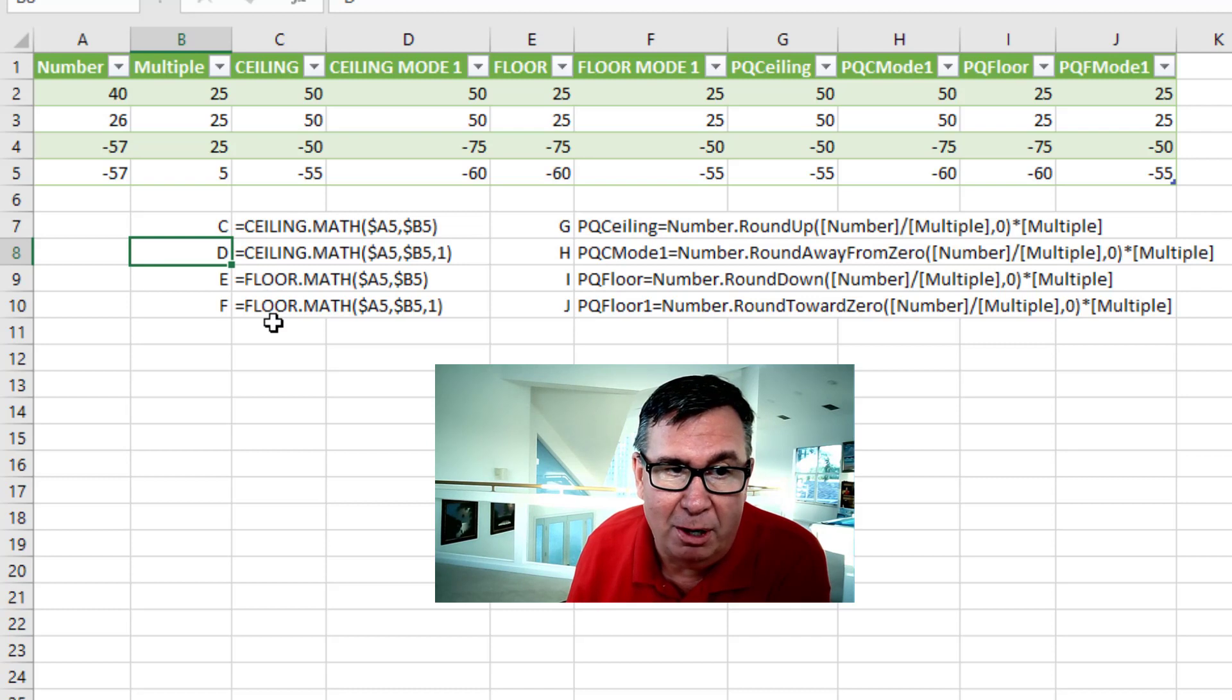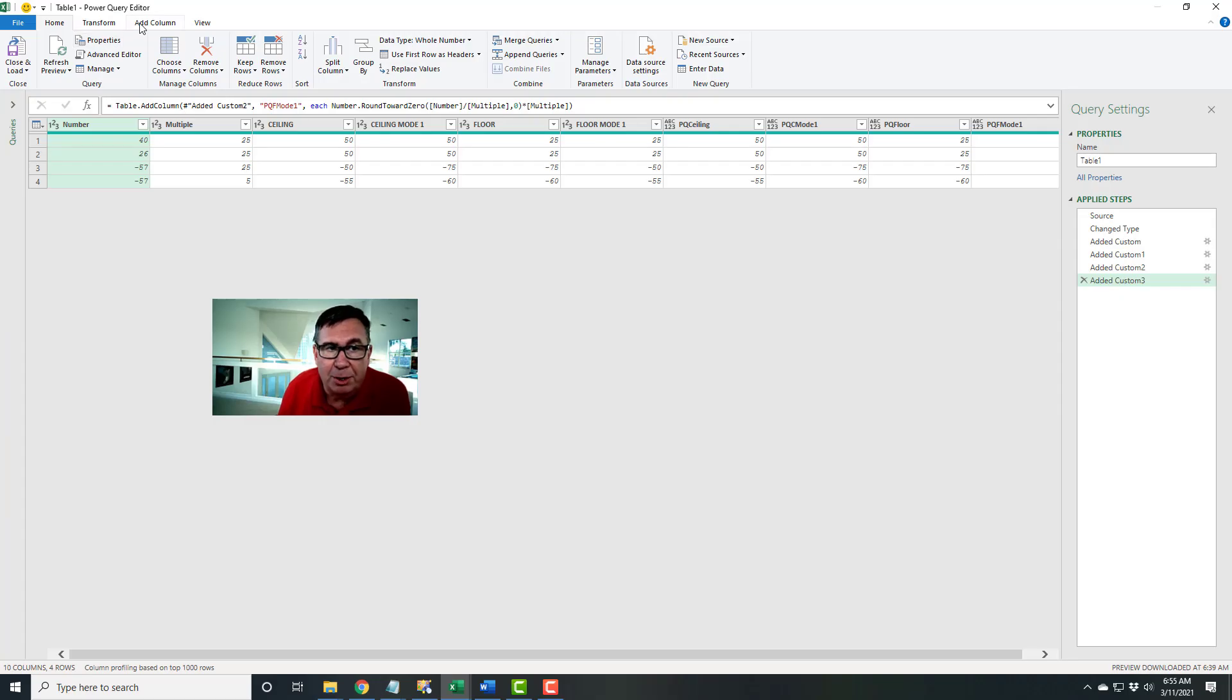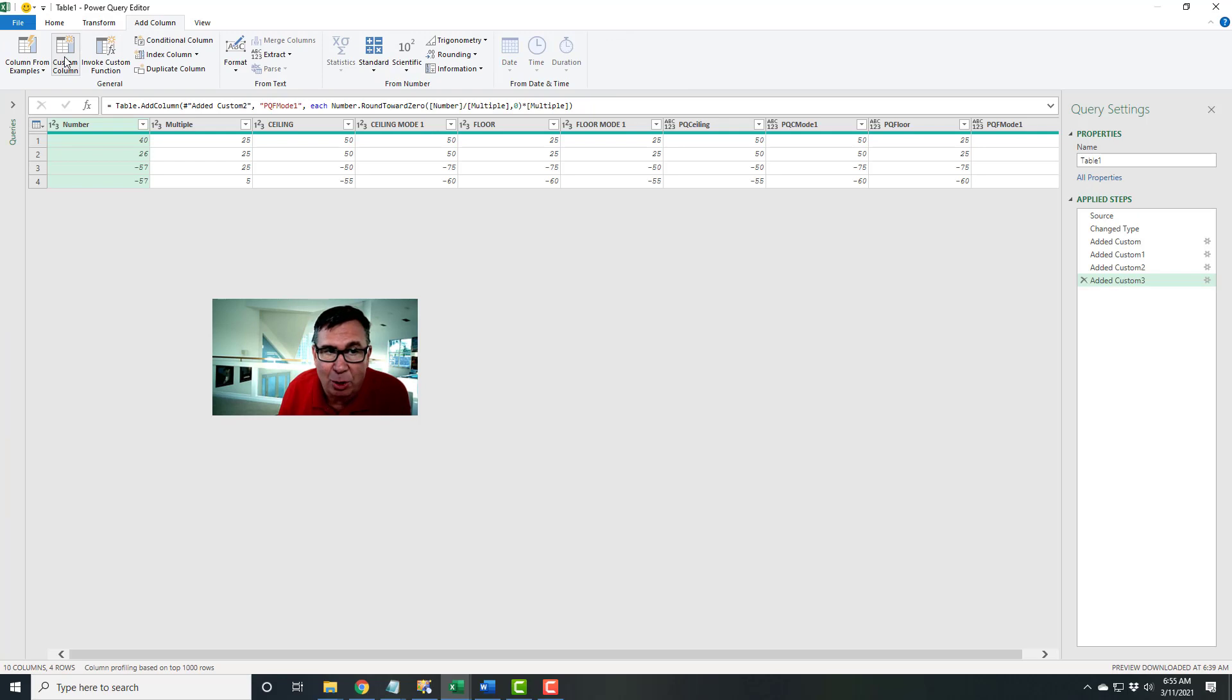So here for each of the four formulas in Excel, here's the equivalent formula in Power Query. To enter these, you're going to go to the Add column and say that you want a custom column. Let's take a look at one of these I created.